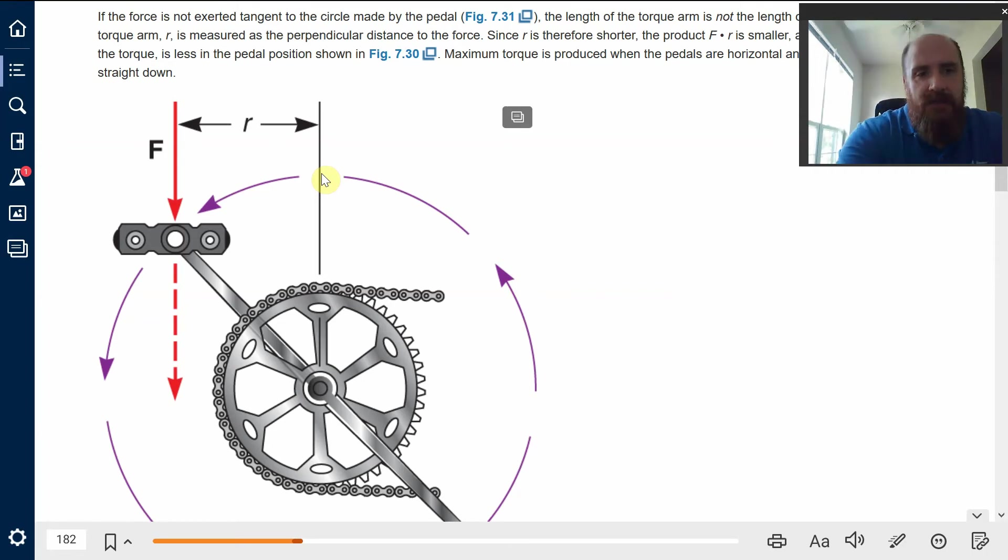So as this pedal goes up in position towards the vertical, the amount of torque that you are applying goes down until it gets to zero. Because as everybody knows, if you apply a lot of force on a pedal that's right vertically above the axis, it doesn't turn.